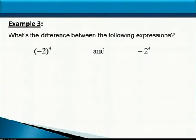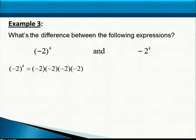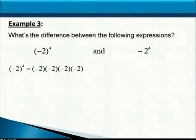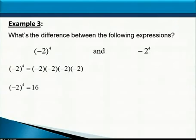With the first expression, the parentheses tells you you're raising negative 2 to the fourth power. As repeated multiplication, that's negative 2 times negative 2 times negative 2 times negative 2. When multiplying integers, if we have an even number of negative numbers being multiplied together, the result is positive. So 2 times 2 times 2 times 2 gives us 16, and because we have an even number of negative signs, we end up with positive 16.